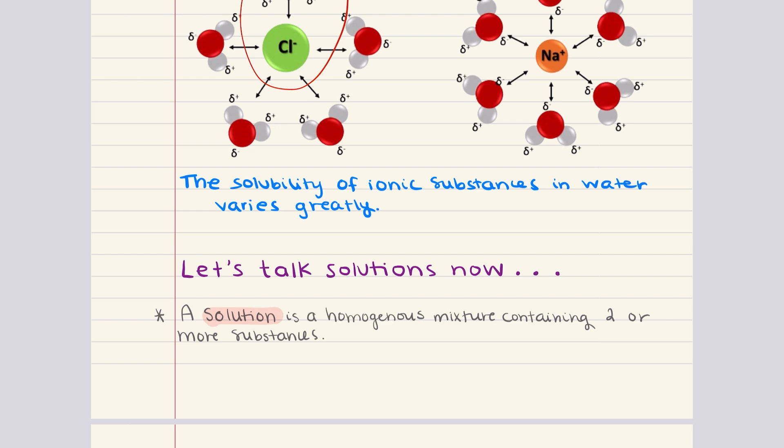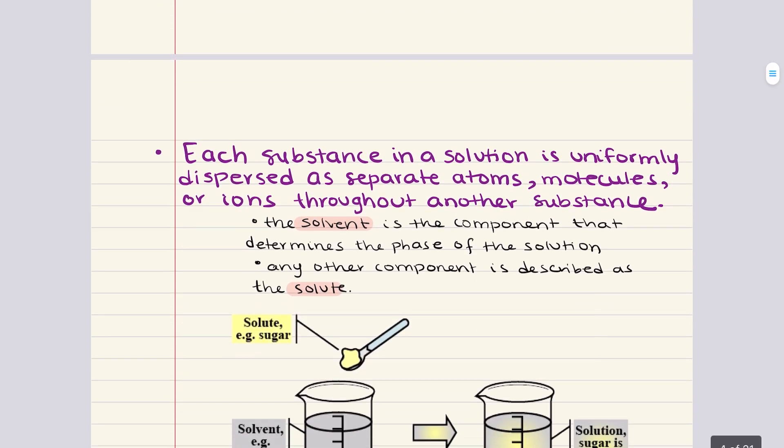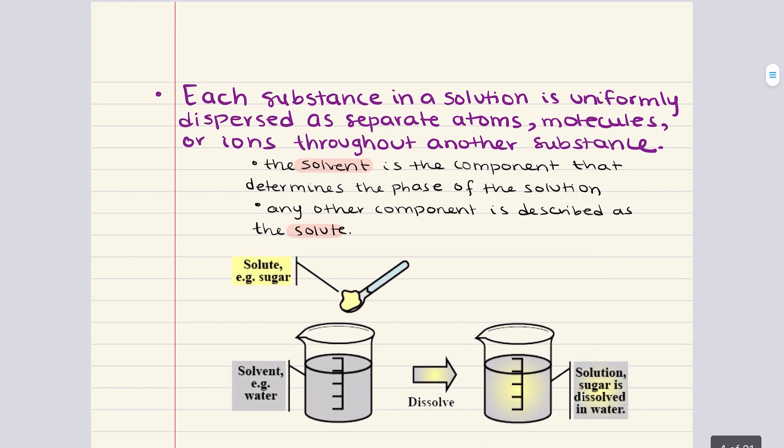So, let's move into discussing the components of solutions now, the solute and the solvent. Again, a solution is a homogeneous mixture containing two or more substances. In any solution, the solute is the substance that is dissolved, while the solvent is the substance in which the solute is dissolved in. The solvent typically determines the phase of the solution.